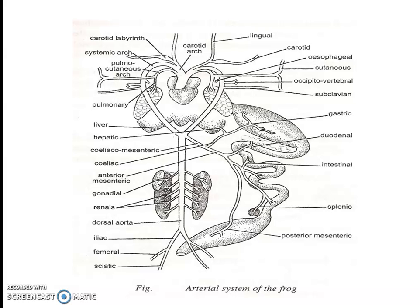Beyond the kidney, the dorsal aorta divides into two: the iliac and pelvic arteries. From each iliac artery, two arteries arise: the vesiculoepigastric artery to the urinary bladder and ventral body wall, and the femoral artery to the thigh.